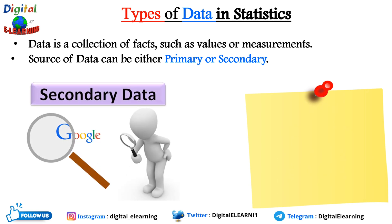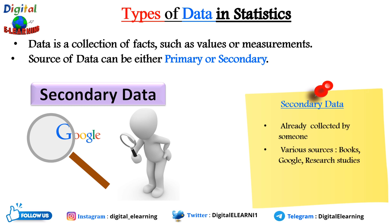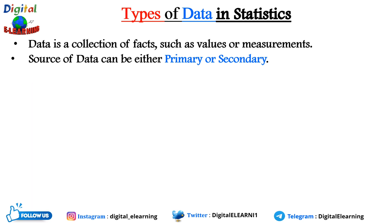Secondary data, on the other hand, is information that has already been collected by someone else for a different purpose. It can come from various sources like books, articles, or research studies. Using secondary data saves time and effort, but it is essential to verify its reliability and relevance for your specific study. For example, if you are researching ice cream industry growth over the past decade, you might find data from government reports showing a steady rise in ice cream sales — this secondary data strengthens your analysis and adds credibility to your findings.